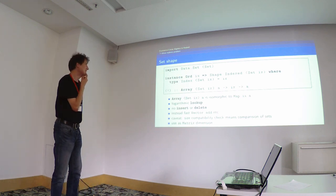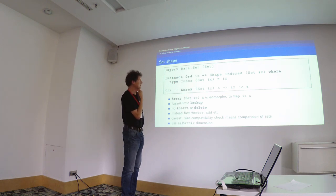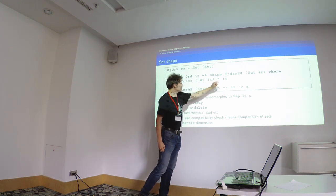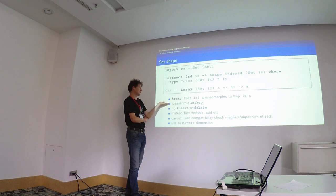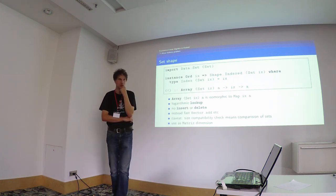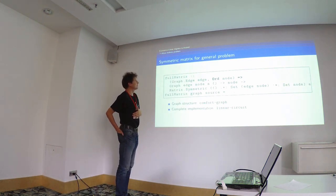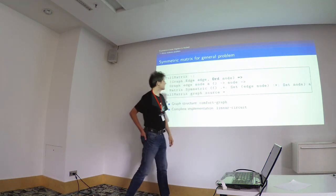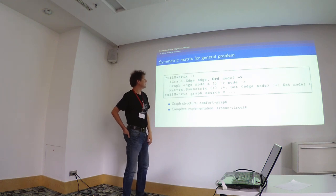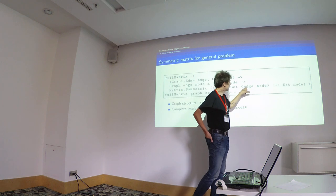One more shape type: how about using an arbitrary set of elements as a shape? Every element of the set can be an index. It's isomorphic to a Map from the containers library — it still has a working lookup, but no insert and no delete. Instead, we can do all the matrix computations. The full matrix definition then changes to a signature that takes a graph with edge and node types, plus a starting node. The shape of the symmetric matrix is generalized to an arbitrary set of edges and an arbitrary set of nodes, but the implementation is almost the same.